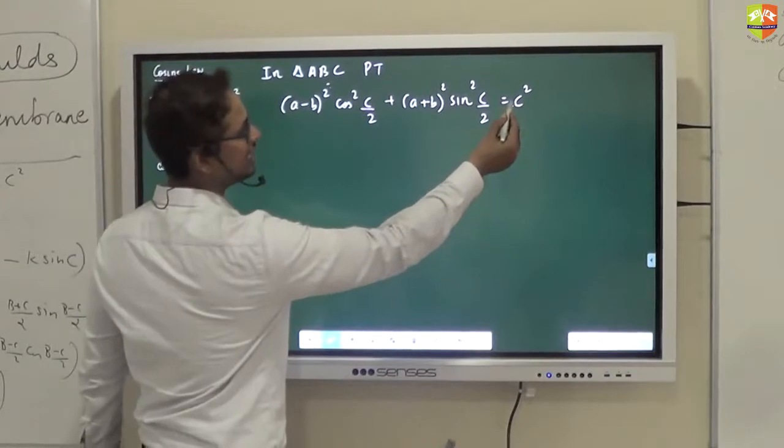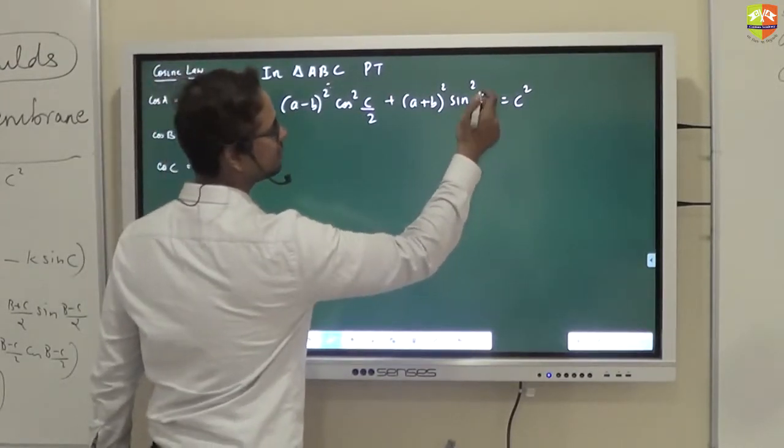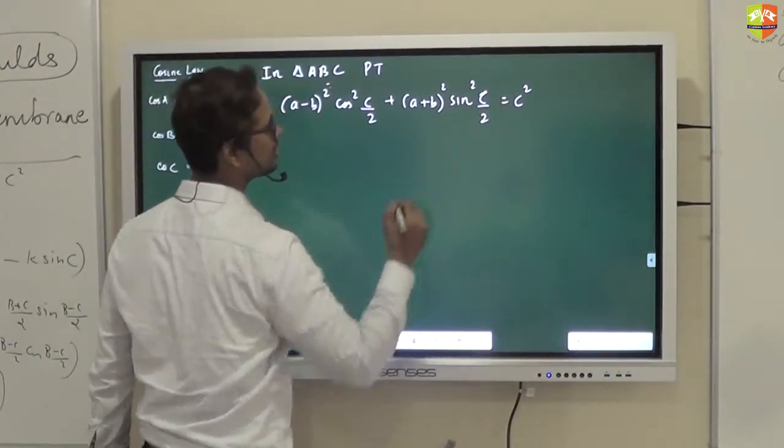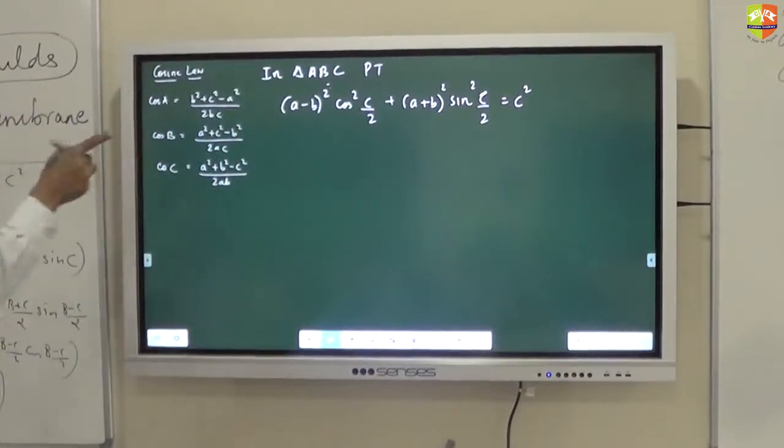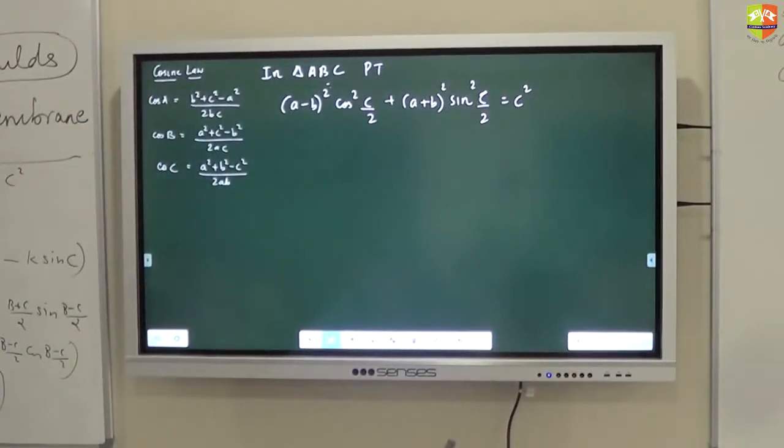Please note, this c is the side, this C is the angle. They are not the same things. That is angle C, that is side c. Side c is the side opposite to angle C.